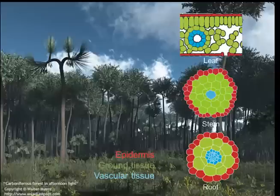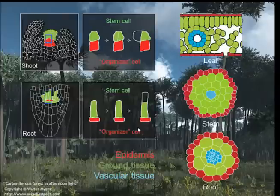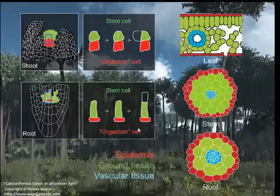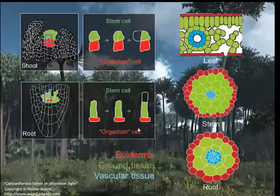In addition to this tissue organization having remained constant for hundreds of millions of years, there is one more thing intimately connected to plant life: the presence of stem cell systems at both shoot and root that produce all the cells that build the organs, the stem, and the root system. In both of these systems, stem cells, highlighted in green, make the cells for the organs, while organizer cells, in red, control the activity of stem cells. In the absence of organizer cells, stem cells lose their identity. So these two cell types need to be organized right next to each other in order to form a functional stem cell system.